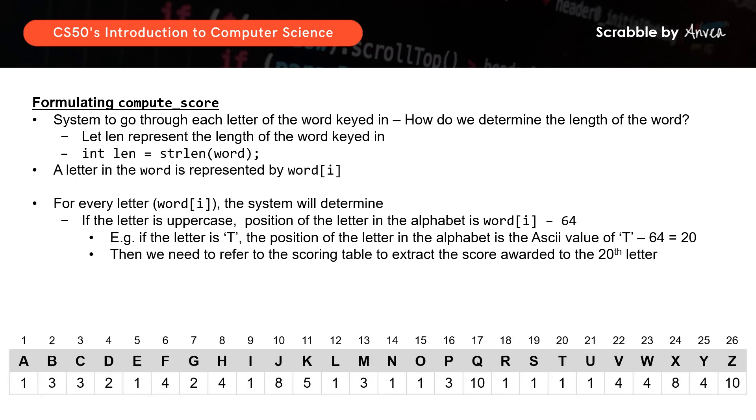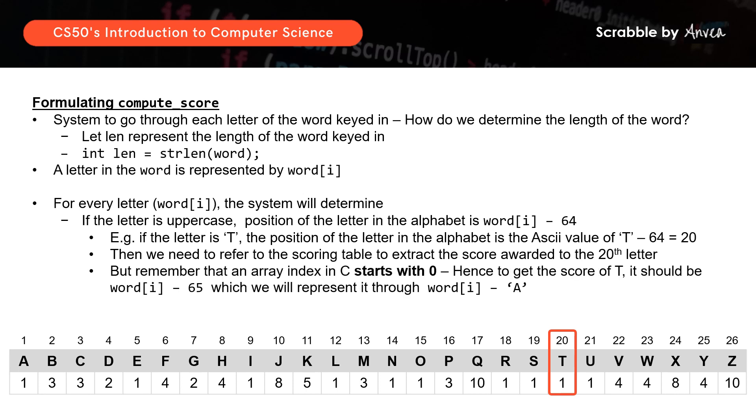But remember that an array index in C starts with 0. Hence, to get the score of T, we should actually take word square bracket i, minus 65 instead, which we would then represent as word square bracket i, minus uppercase A. So this is also what David had gone through in the lecture with us as to why we put minus A instead of minus 65, purely because it's easier to just write minus A, because sometimes we might forget what is the ASCII value of A. So to get the score of any letter in the word, it would be points square bracket, and inside I will put word square bracket i, minus A. So this same flow and logic applies to that of lowercase letters.